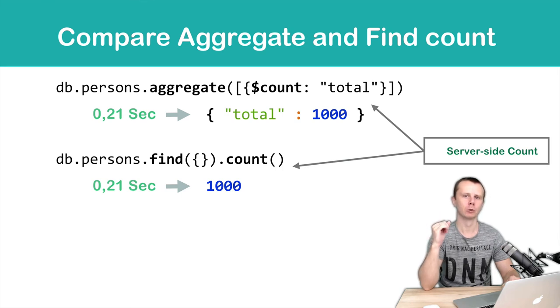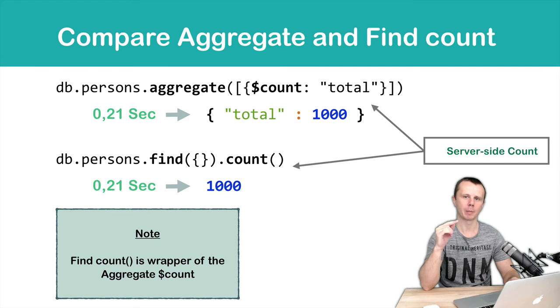And the second important conclusion: the count helper method of the find method is a wrapper of the aggregation count stage.